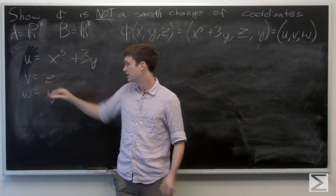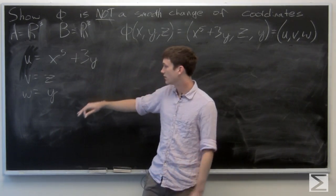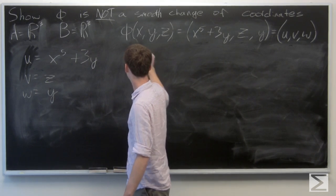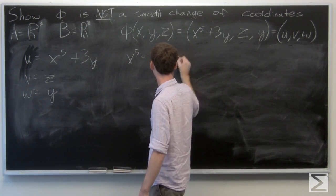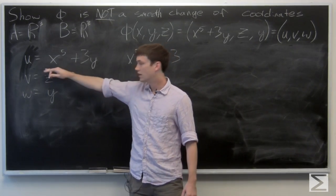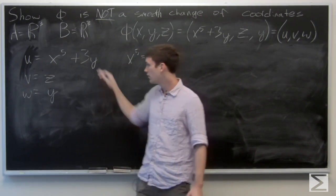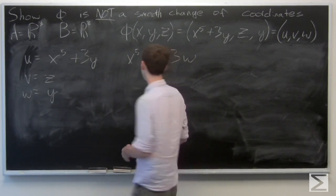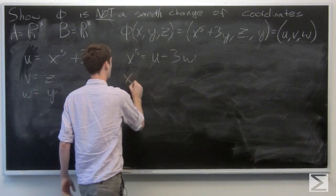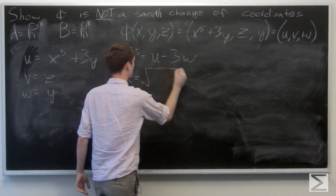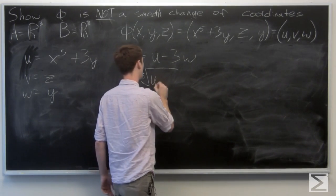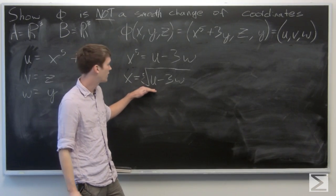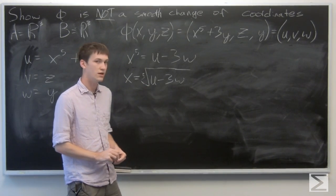So we know y and z, just want to solve for x. Plug in for our value of y, we get x to the fifth is equal to u minus 3y. Y is w, so we can plug in there. Solving for x, we get x is equal to the fifth root of the quantity u minus 3w.